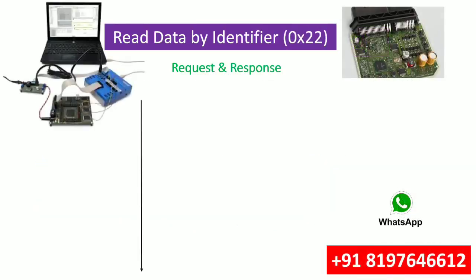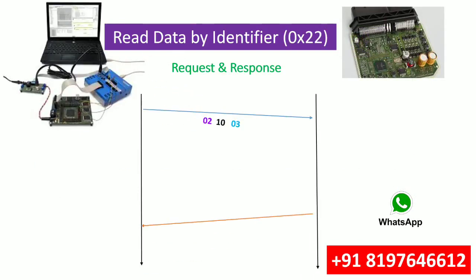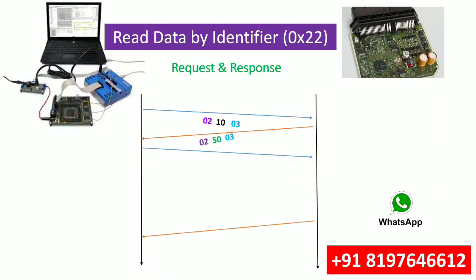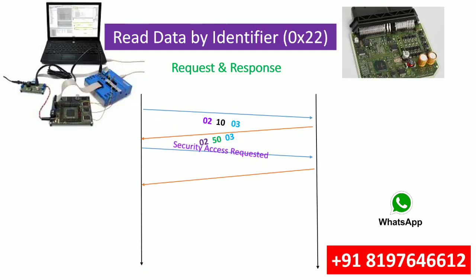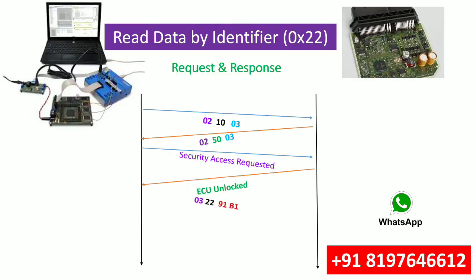Some DIDs also restrict reading. For Read Data by Identifier we use service ID 0x22. The same flow applies: Extended Session is established and acknowledged, then Security Access is requested and the ECU is unlocked.